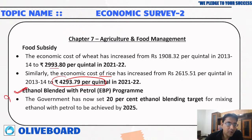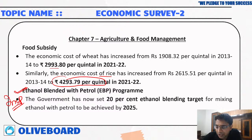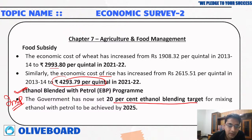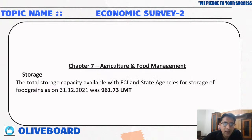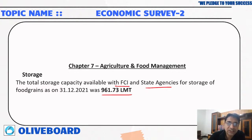On ethanol blending — a commonly asked question — the government has set a target of 20 percent ethanol blending with petrol, to be achieved by 2025. Ethanol is mainly derived from sugarcane during sugar processing. Total FCI and state agency storage capacity stands at 961.73 lakh metric tons.